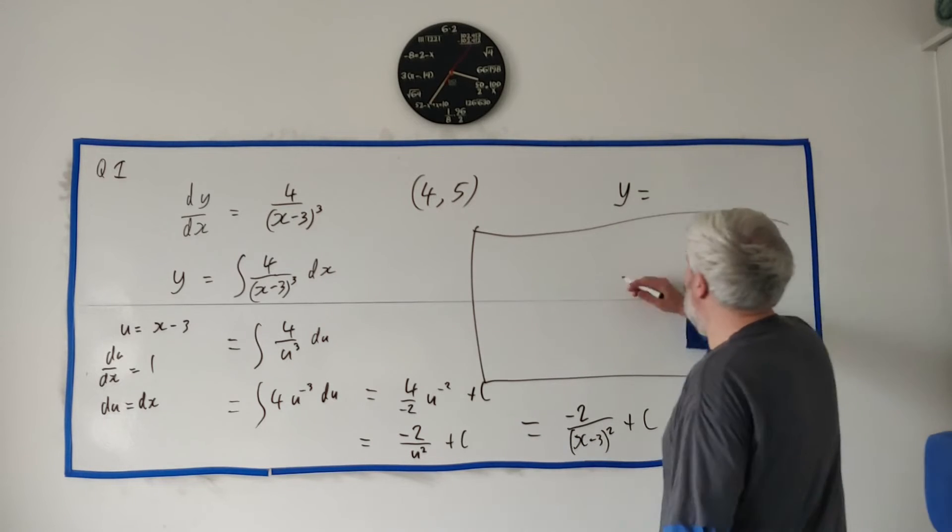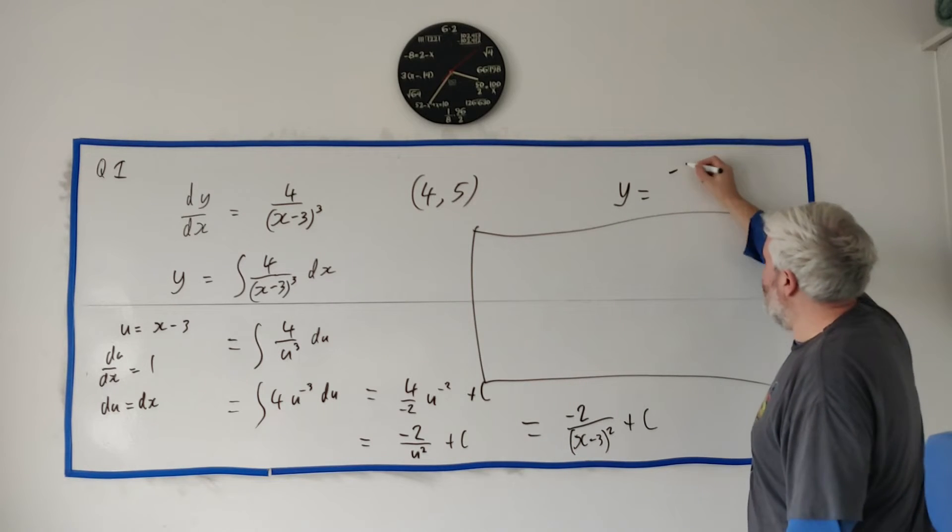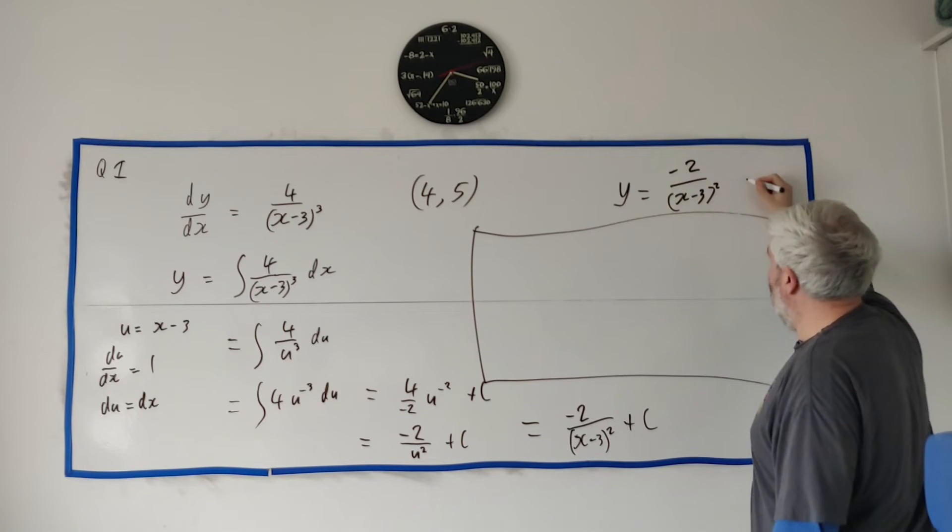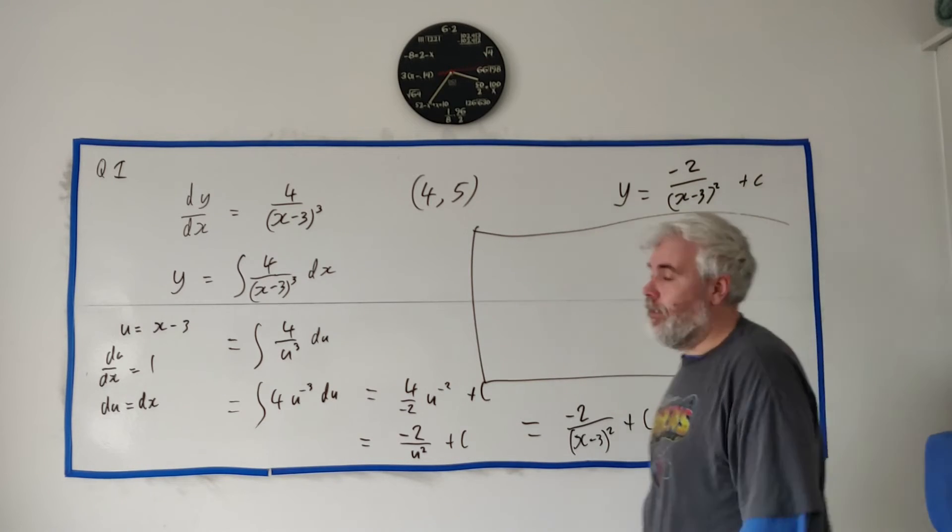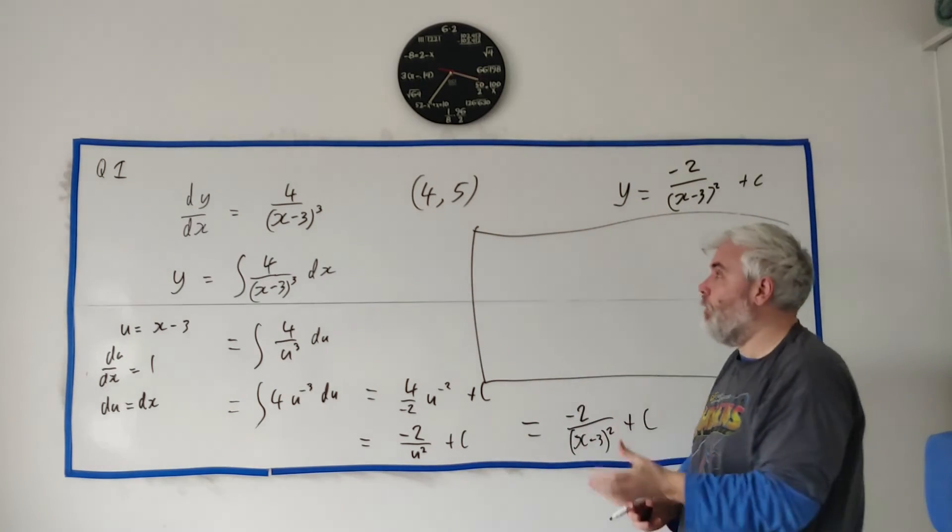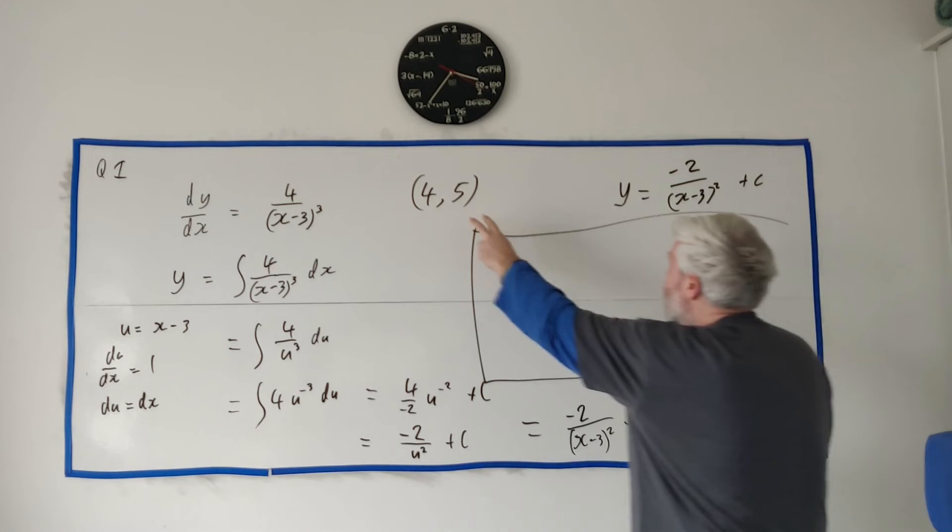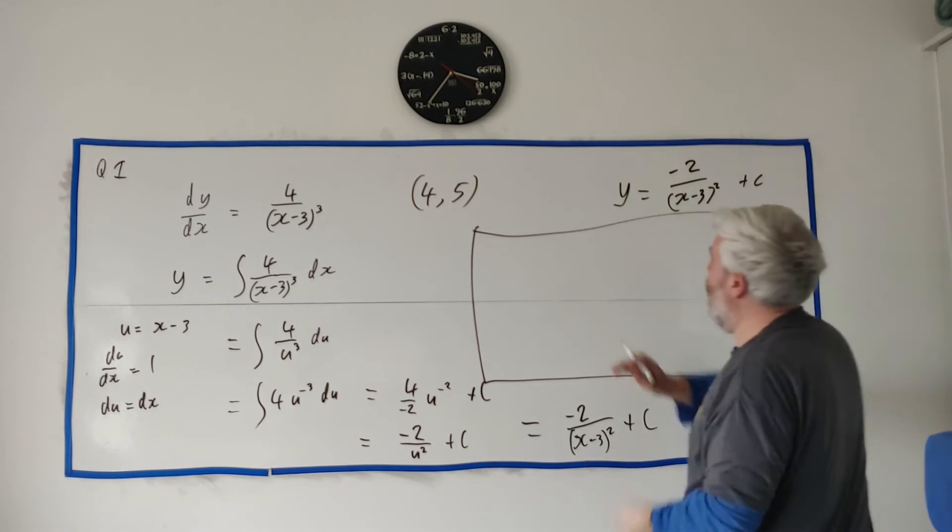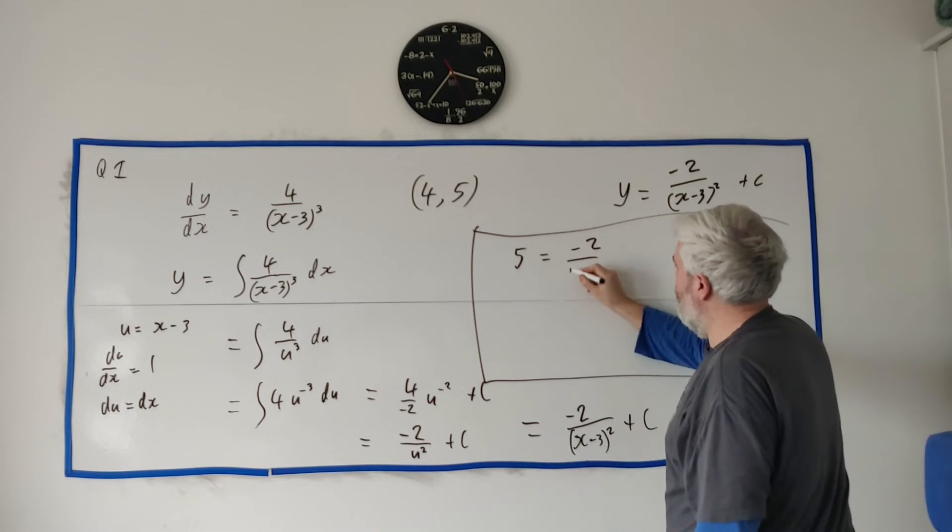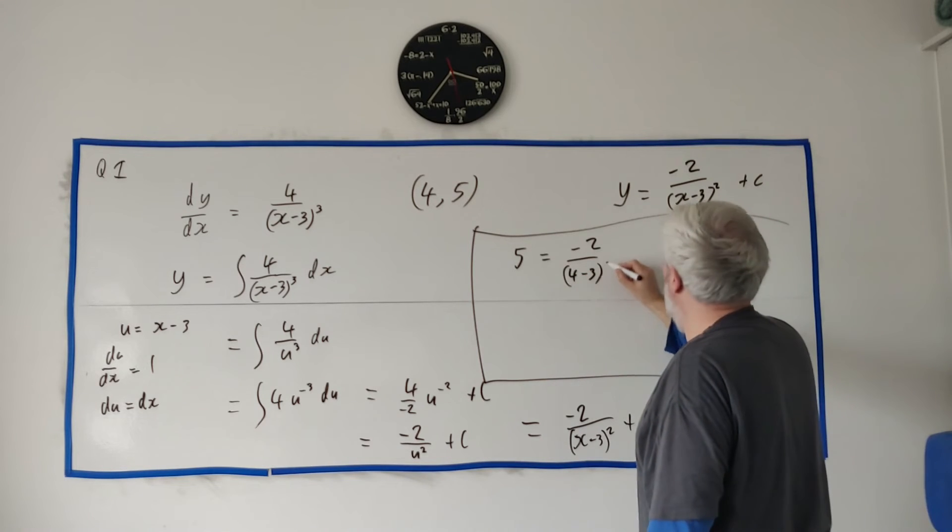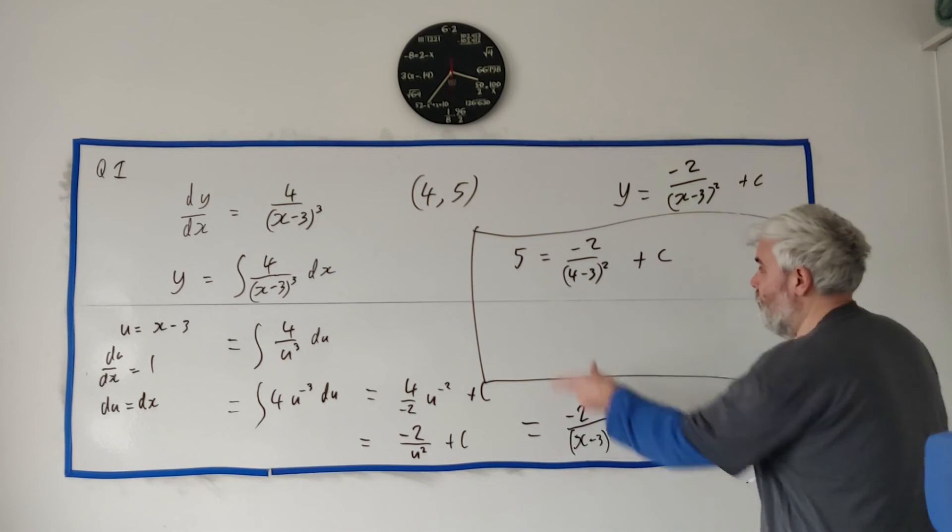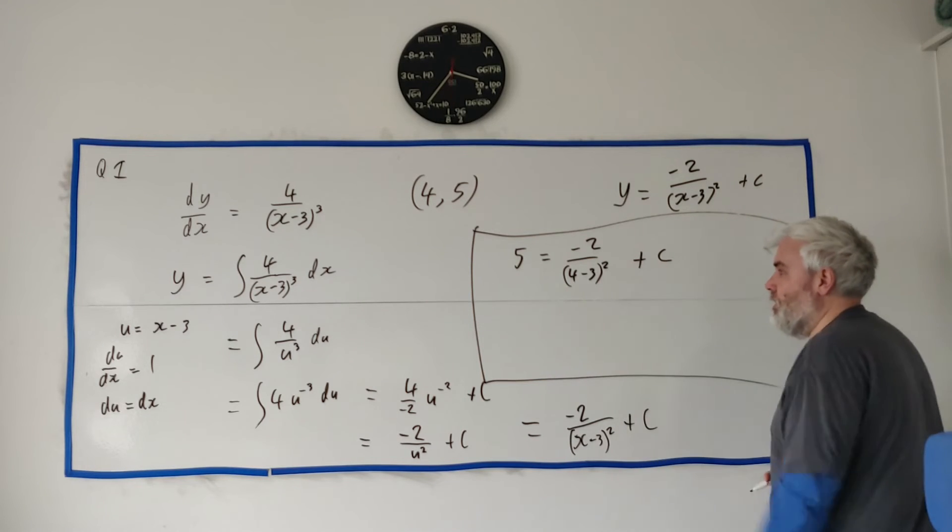Okay, so this final one, let me write it up here. y is equal to minus 2 over (x-3) squared plus c. So what is c? Well, luckily, we know what x and y is at one point. So instead of writing y, let's write 5 minus 2. Instead of writing x, let's write 4 to the power of 2. And that way we'll find out what c is.